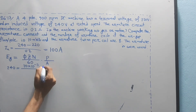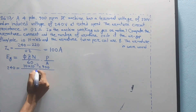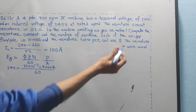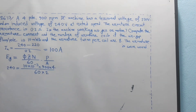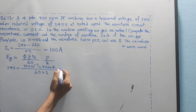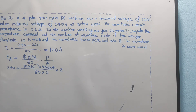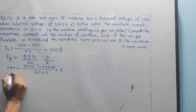Applying the EMF equation Eg = φZNP divided by (60A): 240 equals phi times Z times N times P divided by 60 times A. With flux = 10 milliweber, N = 900 RPM, P = 4, and solving for Z gives the total number of conductors.